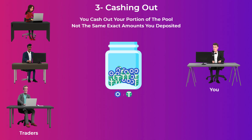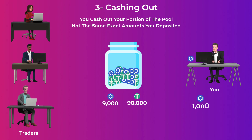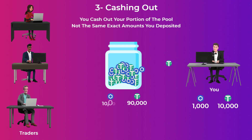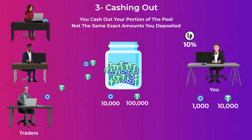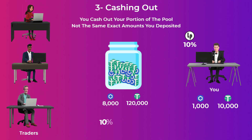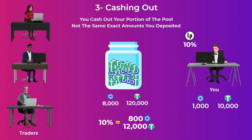For example, if a pool has 9,000 LINK tokens and 90,000 Tether tokens, and you deposited 1,000 LINK and 10,000 Tether — making a total of 10,000 LINK and 100,000 Tether — you now own 10% of the pool. If at the time you cash out a lot of people had bought LINK tokens and now there are only 8,000 LINK and 120,000 Tether, you will get 10% of those: 800 LINK and 12,000 Tether, just like the example at the beginning.